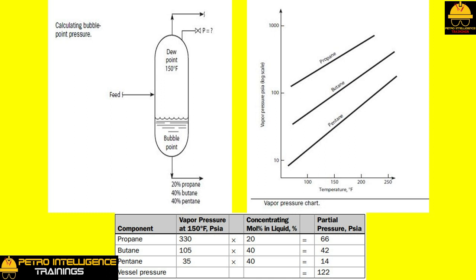For example, the concentration of propane in the vapor leaving the drum shown in picture is 66 psia divided by 122 psia equals 54 percent. What is the concentration of pentane in the vapor? The answer is 14 divided by 122 is equal to 11.5 percent.